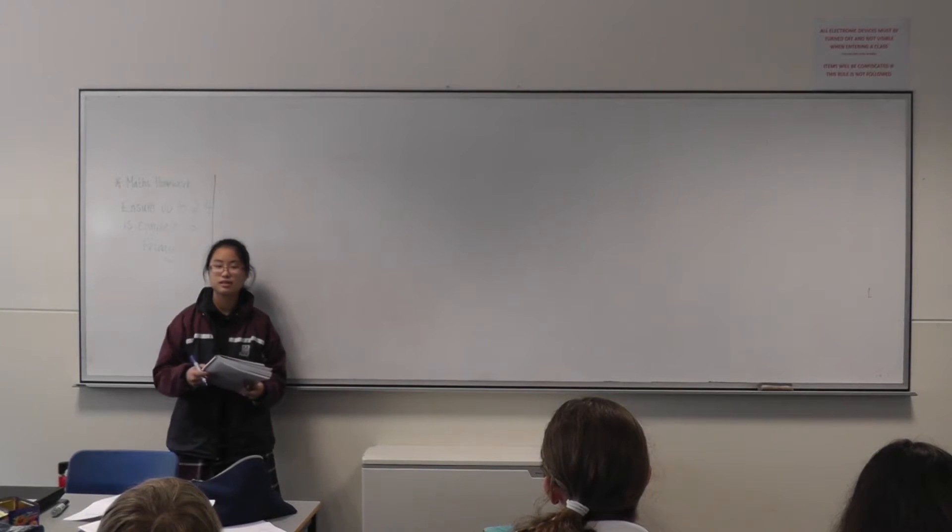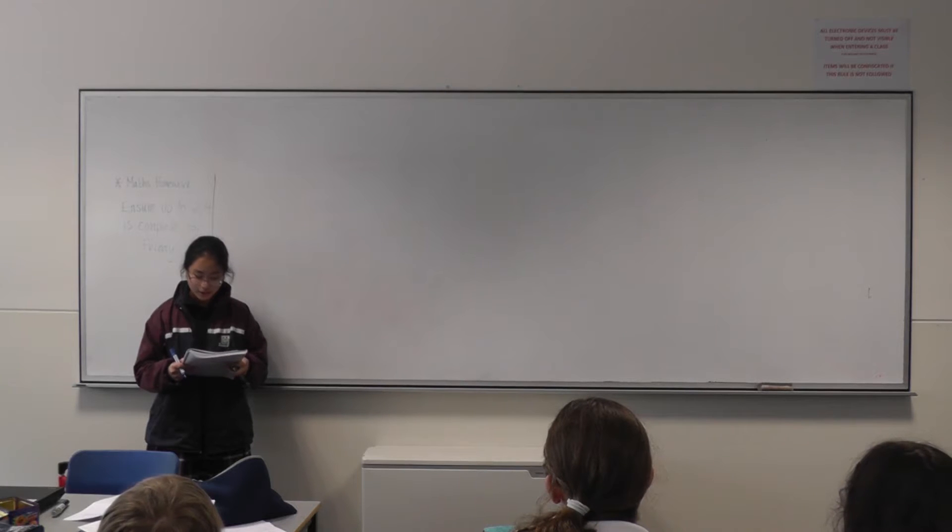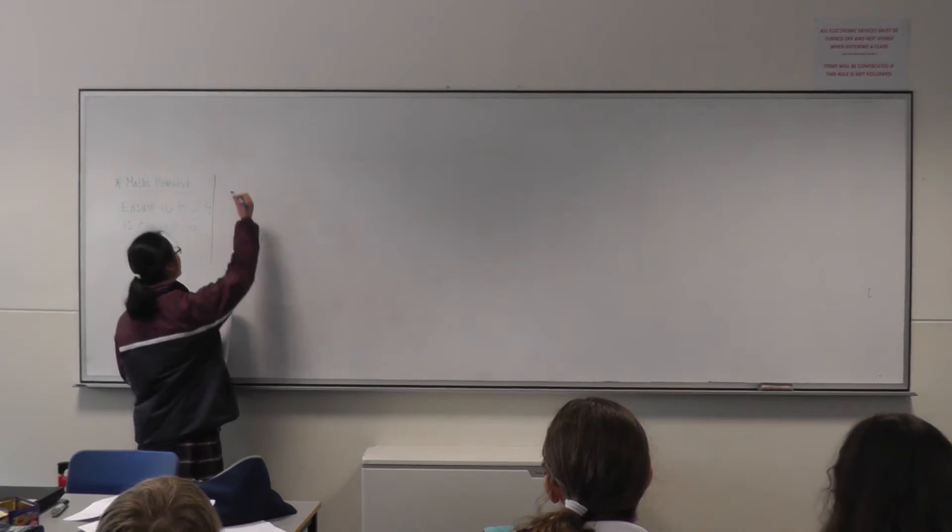All right, we're about to go, Ryan? Yeah. In a school photo, the 630 pupils are arranged in rows. Each row has three more pupils in it than the row in front of it. Of the numbers below, which number of rows is impossible? Okay, so the options are...